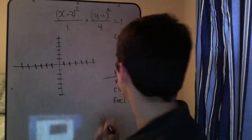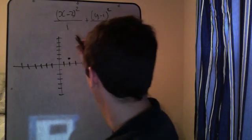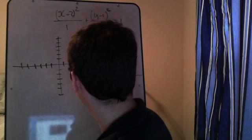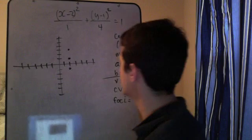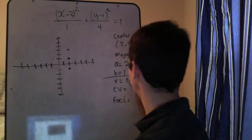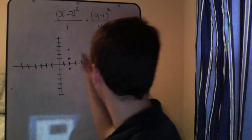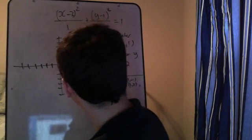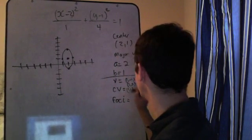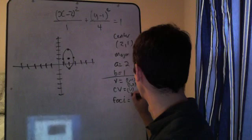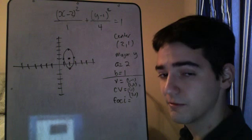Okay, we're good. Alright, so let's go ahead and plot everything. 2, 1. So we're going to go up 2 and down 2. So we have 2, negative 1. And... 2, 3. As our vertices. The vertices are along the major axis always. And then we go left 1. And right 1. So we have 1, 1. As a co-vertex. And 3, 1. As a vertex.